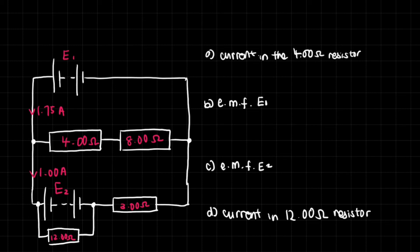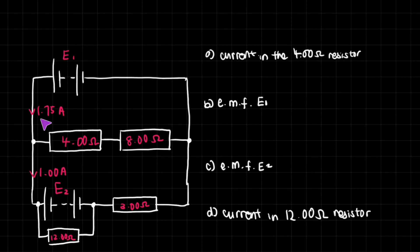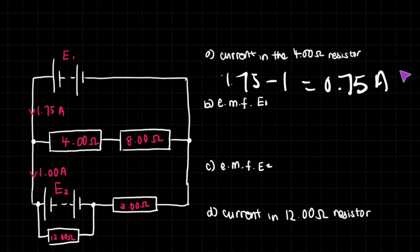Now let's look at something slightly more complex. We have unknown cells with unknown electromotive forces and several resistors. The question asks: what is the current in the 4-ohm resistor? This applies Kirchhoff's first law — the total amount of current going into a junction equals the total amount coming out. 1.75 amps is going into this junction and only 1 amp is coming out, so 1.75 minus 1 equals 0.75 amps going through that branch.